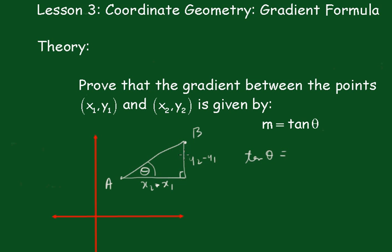And the opposite is y₂ minus y₁ over x₂ minus x₁. Therefore m must be equal to the tan θ.